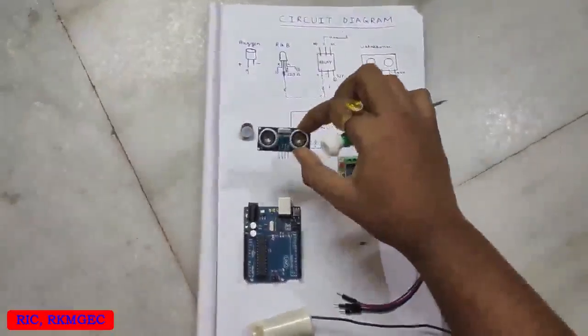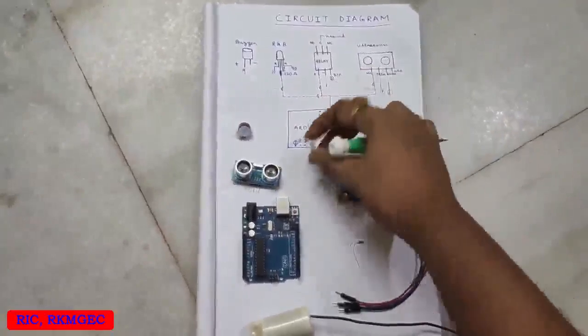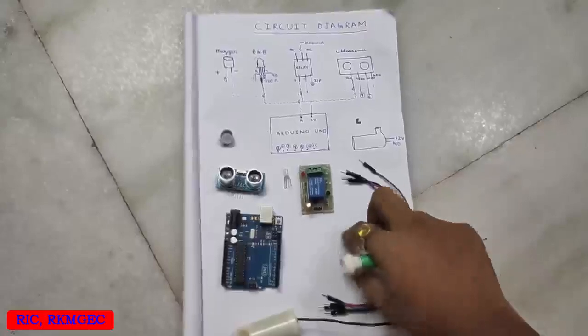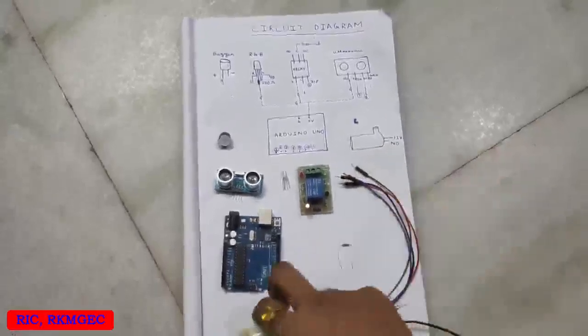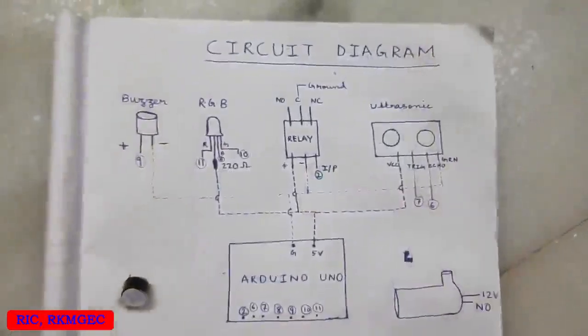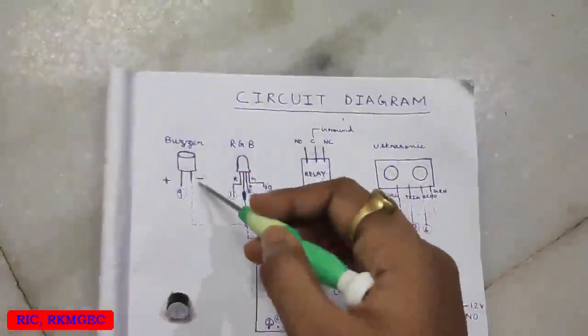An ultrasonic sound sensor, an RGB LED light, a relay module, an Arduino Uno, a resistor of 330 ohm, and few jumper wires, and of course a demonstration purpose pump. So let's understand the circuit diagram.